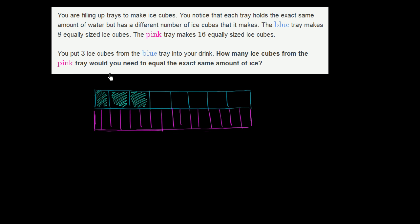How many ice cubes from the pink tray would you need to equal the same exact amount of ice? There's a bunch of ways to do it. We can think about it with numbers or visually. Let's first think about it with numbers. So how much of this tray have I pulled out? Well, I have eight equally sized cubes and I took three of them out. So this literally represents three eighths.